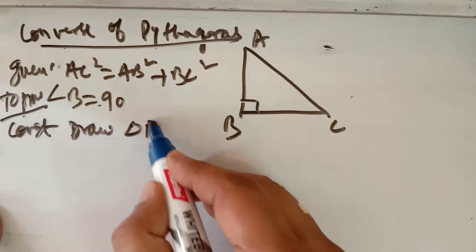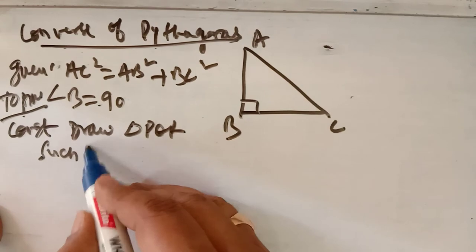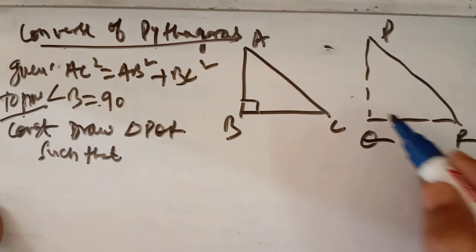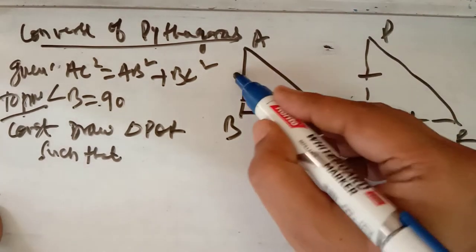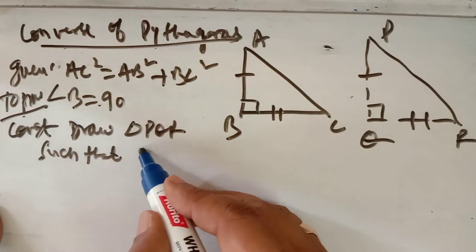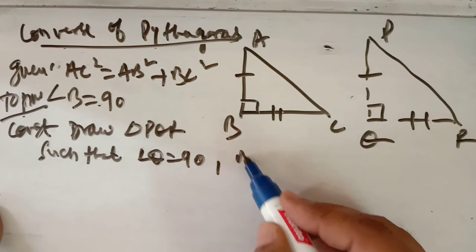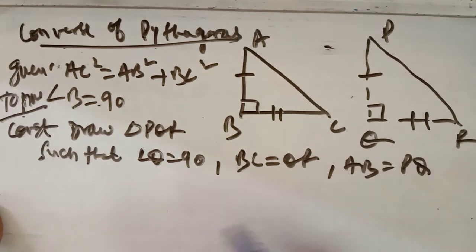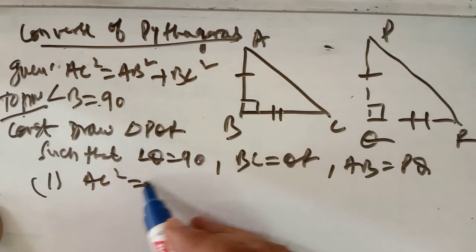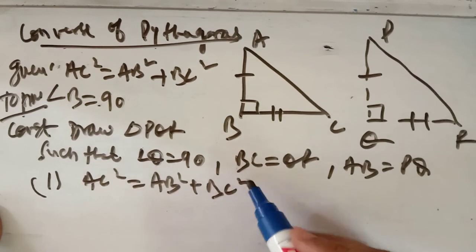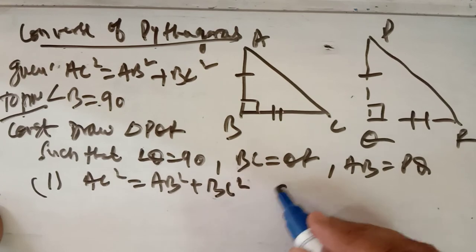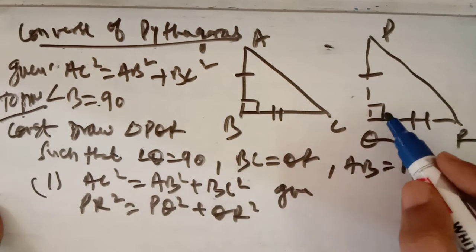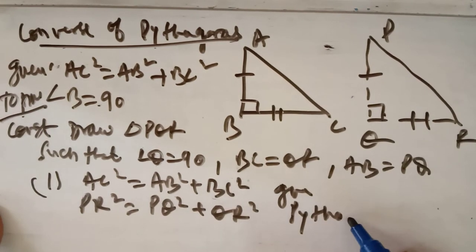To prove this, construct a right-angled triangle PQR such that angle Q equals 90 degrees, PQ = AB, and QR = BC. Since PQR is a right-angled triangle, by the Pythagoras theorem PR² = PQ² + QR². It is given that AC² = AB² + BC².